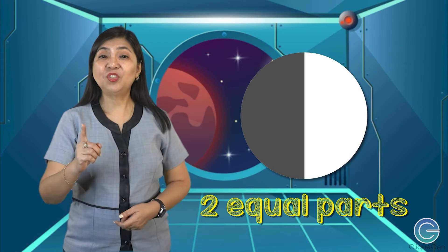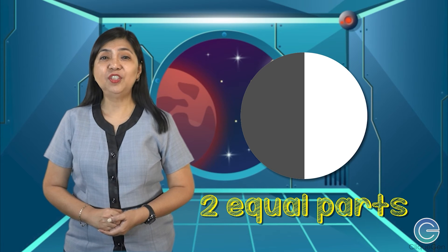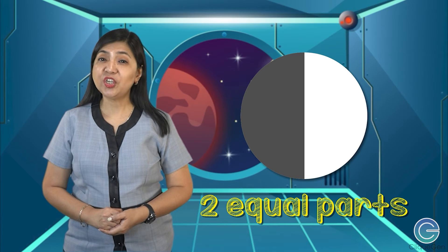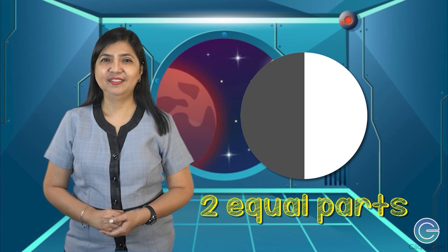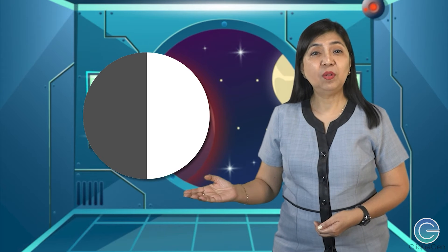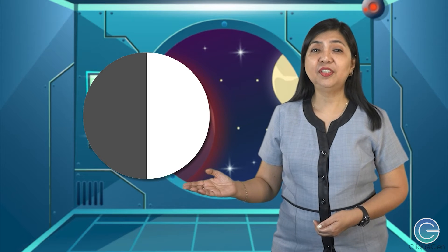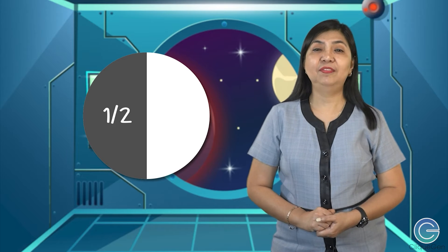That's right! What part of the circle is shaded? One of the two equal parts of the circle is shaded. This is one half of the circle.